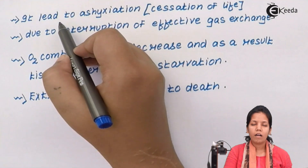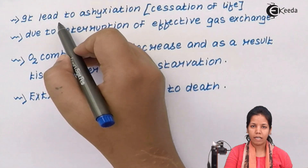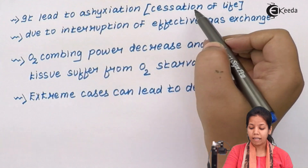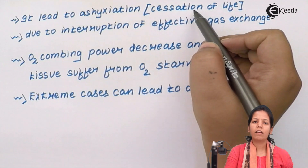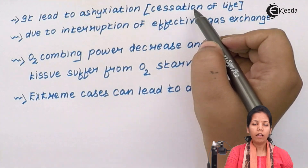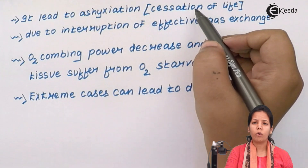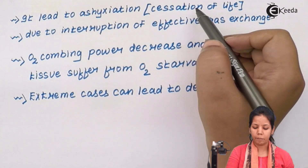If carboxyhemoglobin is formed — i.e., carbon monoxide combines with Hb or hemoglobin inside your body — then it can lead to cessation of life. Basically, a person could go into trauma or a paralytic attack, and ultimately heart, liver, and brain functioning would come to a standstill — essentially a coma condition.